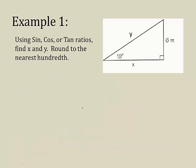Alright, let's try one. Using sine, cosine, or tangent ratios, find x and y. Round to the nearest hundredth. So here's my triangle. First thing I want to do is label opposite, adjacent, and hypotenuse relative to my angle theta. This is my theta. So relative to this, what's opposite me? Well, this side six. This is my opposite, this is my adjacent, and this is the hypotenuse. So we need to find x and y. I'm just going to find x first.